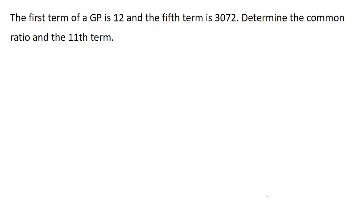The question for this video is: the first term of a GP is 12 and the fifth term is 3072. Determine the common ratio and the eleventh term. The question wants us to use this information to determine the common ratio and the eleventh term.